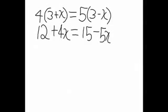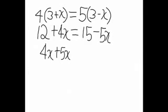Now we have to collect like terms. Collecting like terms is when you move all the x's to one side and all the normal numbers to the other side. When a number moves to a different side, the minus or plus in front of it changes to the opposite. For example, the negative 5x would turn into a positive 5x on the other side. So what we do is: 4x plus 5x equals 15 minus 12.